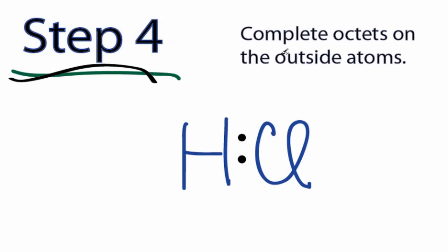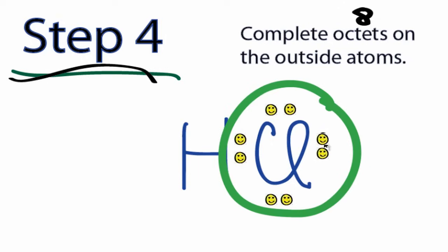Step 4. Complete the octets on the outside atoms. Octet means eight. For HCl, we have a total of eight valence electrons, one for the hydrogen, seven for the chlorine. So we've used two already to form the chemical bond. For the chlorine, we'll put four, six, and then eight. We've used all the valence electrons, and we've completed the octet for chlorine. It has eight valence electrons.